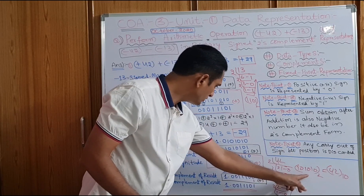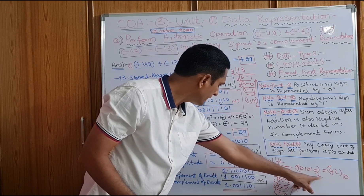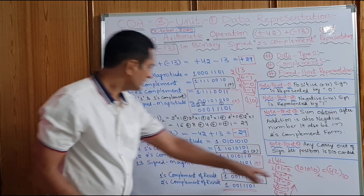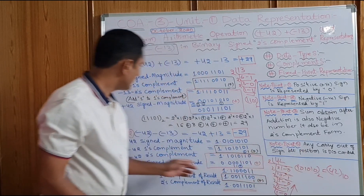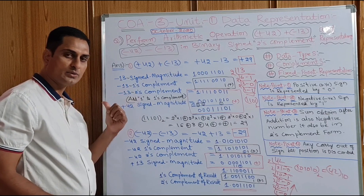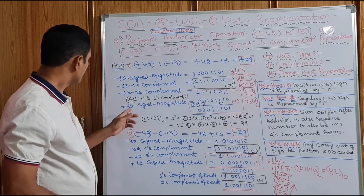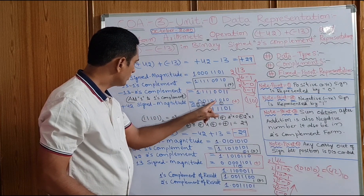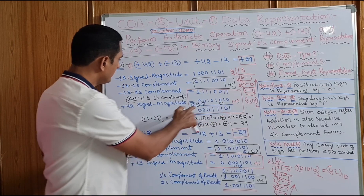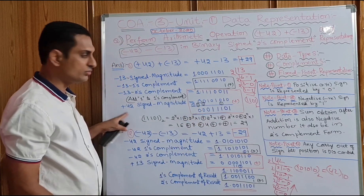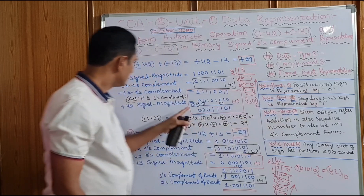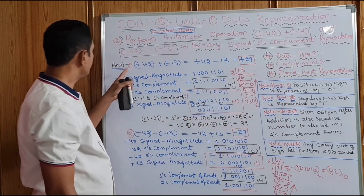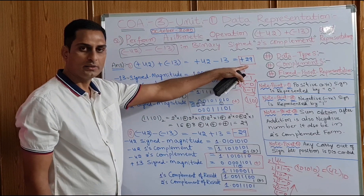So 42 in binary is 1, 0, 1, 0, 1, 0 — these are 6 bits. We need to add 2 numbers; the last bit is the sign bit. For 42, we have 0, 1, 0, 1, 0, 1, 0, and sign bit is 0 because it is positive (note point 1). Now we need to add these two numbers to get the result of plus 29.